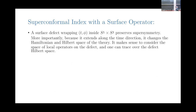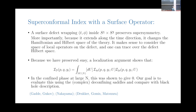This theory will essentially have N hypermultiplets and a U(1) worldvolume gauge field. Importantly, the matter content of this 2D-4D system is gauged by the 4D SU(N) fields. A surface defect wraps a surface, and on this S1 cross S3 background, the defect will wrap a thermal circle as well as one of the angular directions on S3. It preserves the 1/16 supersymmetry required, and additionally, because it extends along the time direction, it's changing the Hamiltonian and Hilbert space of the theory. It now makes sense in the microscopic language to consider the space of local operators on the defect and trace over this defect Hilbert space.